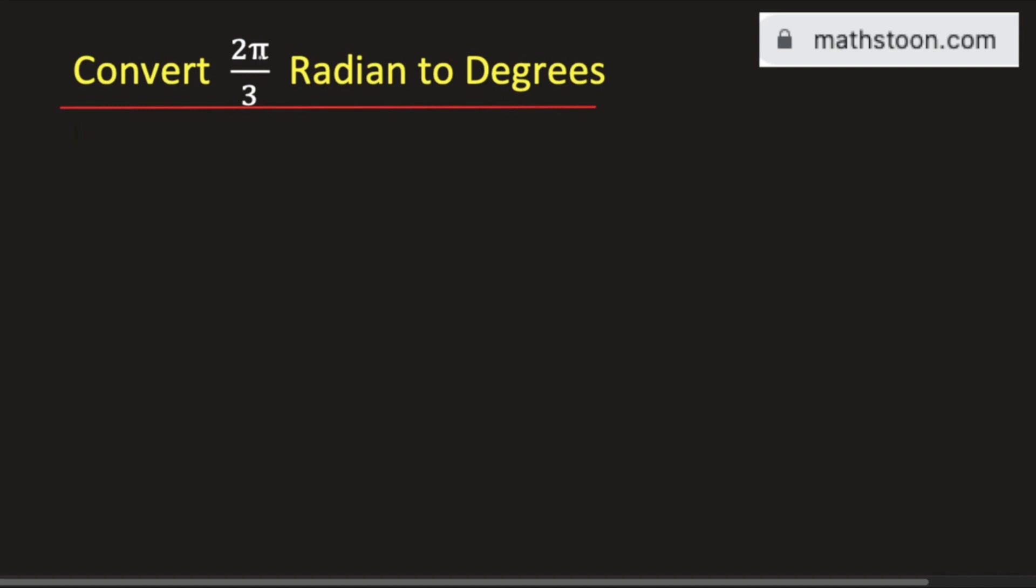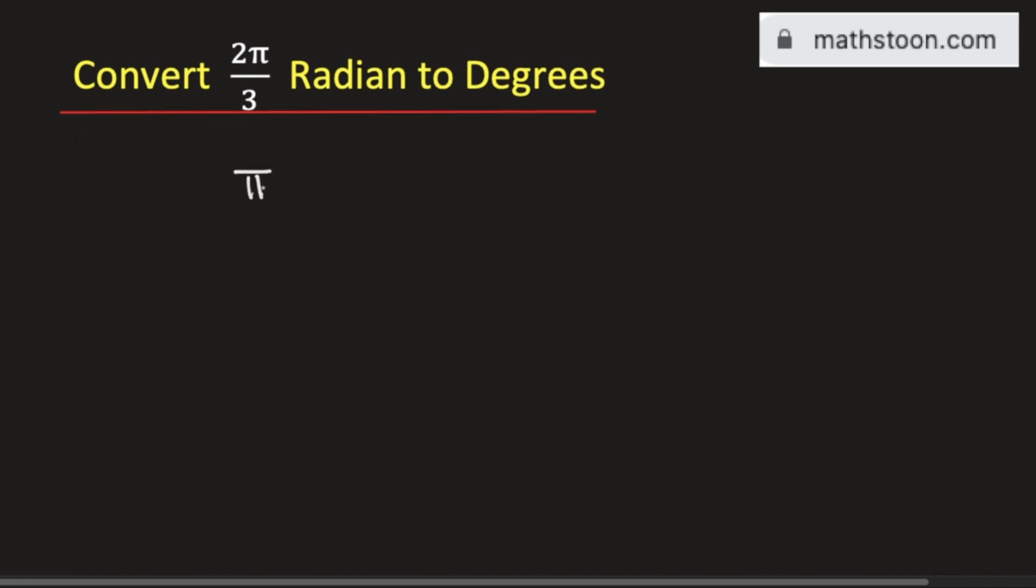In this video we will learn to convert 2π divided by 3 radian into degree. We know that π radian is equal to 180 degrees.